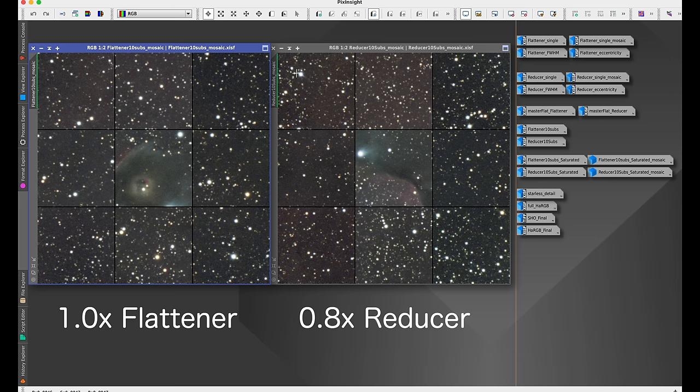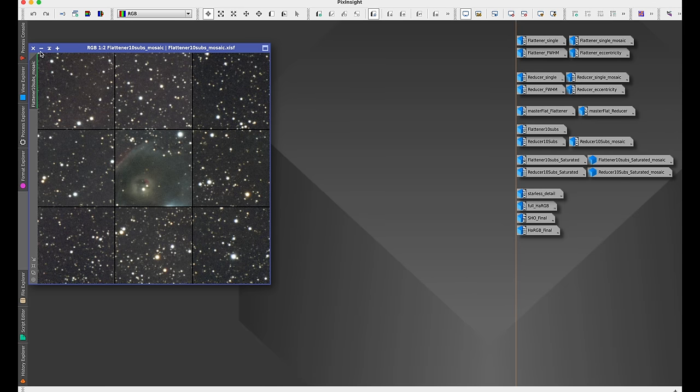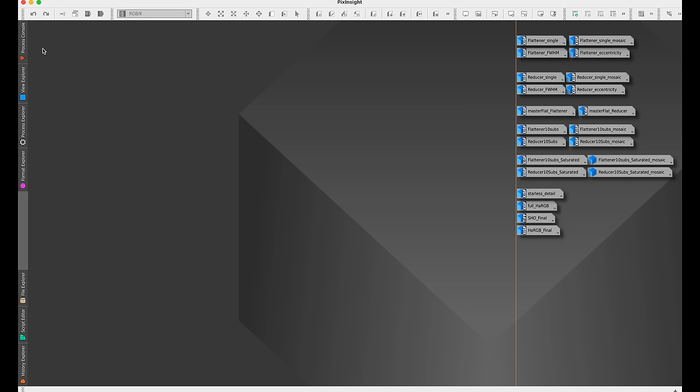Compared to the one with the flattener, again, very nice job. All the stars look pretty good. I will say that there's a little bit more of this little flare effect. You can see it very slightly with the flattener, but then with the reducer it's a little bit more obvious on some of the corner stars, the bright corner stars with the reducer. That's really minimal though. I've seen much much worse than that. I mean, in terms of star shapes this is pretty amazing. I have nothing to complain about here.